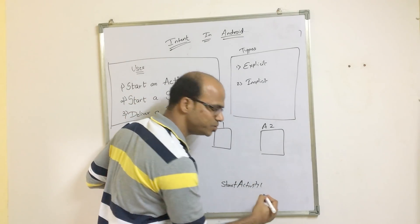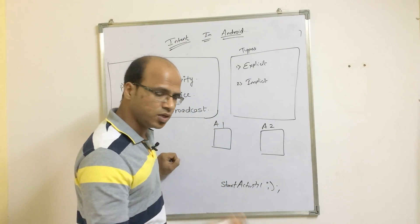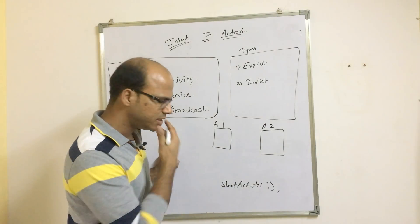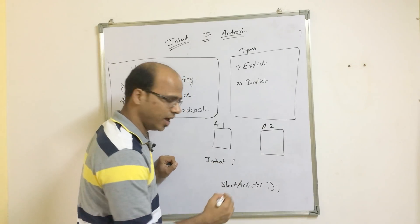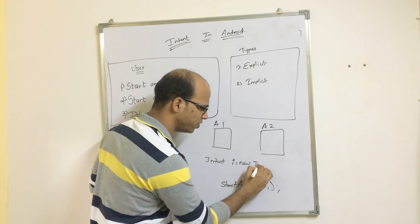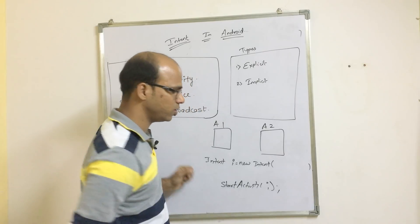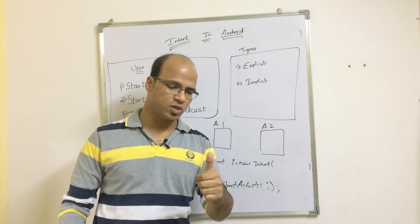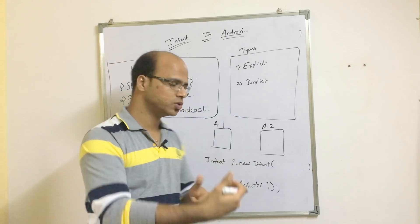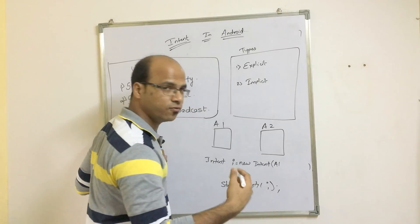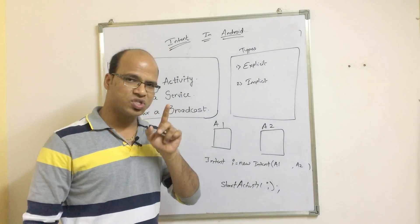You cannot mention just the activity name — you have to pass the object of intent. Let's say the intent object is 'i'. To create it, you write: Intent i = new Intent. In the brackets you pass two parameters: the first is from where you are calling the activity (from which activity), and the second is which activity to call. So we are calling from a1 to a2.